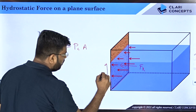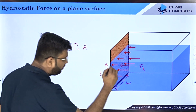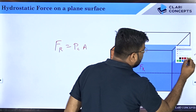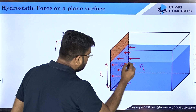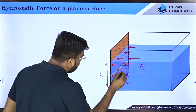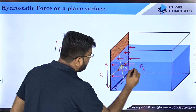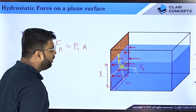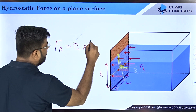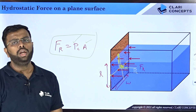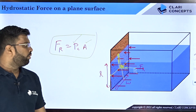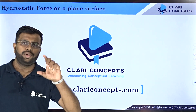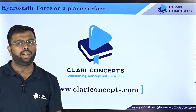Coming back to the original question: to find the resultant force FR on this wall, use FR = pressure at centroid × area. For a rectangular wall of length l and width w, locate the centroid at the halfway point. The pressure at the centroid is pc = p₀ + ρg·(l/2). Multiply by the area to get the resultant force. We'll continue in the next class, looking at the location of this force and the center of pressure.